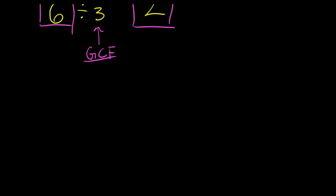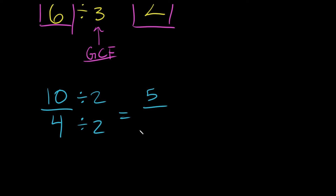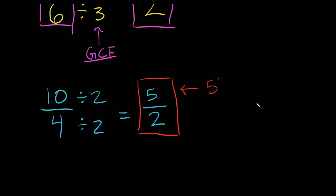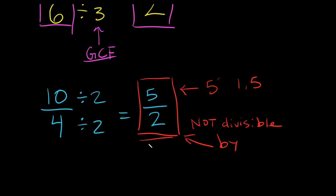Now here's an improper fraction. What if I had 10 over four? What's the biggest number that goes into four and 10 evenly? That'd be two. So we divide the top by two and the bottom by two. Ten divided by two is five, four divided by two is two. Can we reduce this down any more? No. Five is a prime number, meaning five is only divisible by one and five. Two does not go into five evenly, so five over two is our simplest form. Two is our GCF.